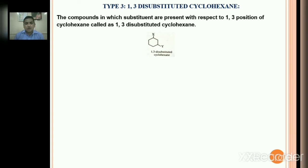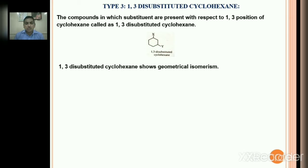Like 1,2-disubstituted cyclohexane, 1,3-disubstituted cyclohexane also shows geometrical isomerism. Remember, 1,1-disubstituted cyclohexane does not show geometrical isomerism, but 1,2-, 1,3-, and 1,4-disubstituted cyclohexane do show geometrical isomerism. Geometrical isomerism means cis-trans isomerism, so 1,3-disubstituted cyclohexane shows cis-trans isomerism.